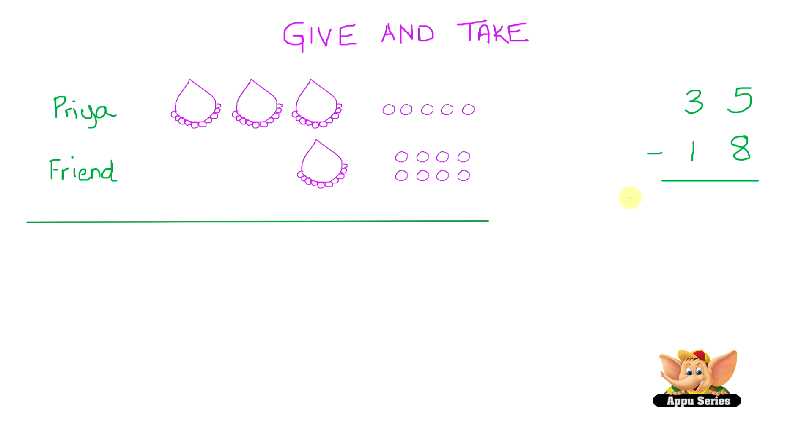So let's try to subtract the loose pearls first. If you look over here, you'll see Priya has 5 loose pearls. And she gives her friend 8 loose pearls. How do we give away 8 when you only have 5 loose pearls? We know that each necklace is a group of 10 pearls. So this is what we can do.